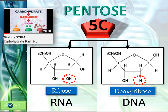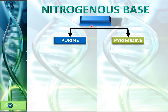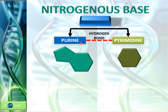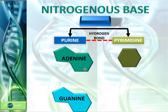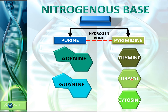Now let's move on to see the five different types of nitrogenous bases. Nitrogenous bases are divided into two groups: purine and pyrimidine. Purines will bind with pyrimidines by hydrogen bonding. Purine molecules are made up of a two-ring structure. There are two types of purine: adenine and guanine. Whereas there are three types of pyrimidine: thymine, uracil, and cytosine.